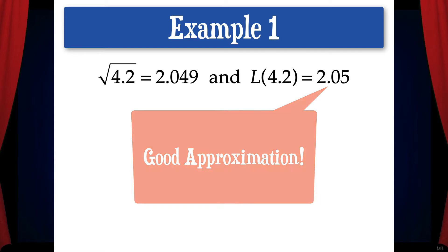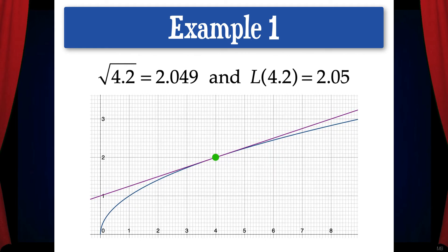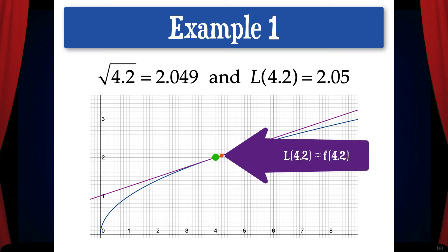Here I've also shown a graph of the square root of x and the tangent line at x equals 4. As you can see, the tangent line and the graph seem to merge together around x equals 4. And from this viewpoint, it's impossible to see the difference between f of 4.2 and L of 4.2. So here we've shown graphically that the tangent line gives us a good approximation of the curve near x equals 4.